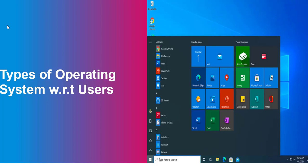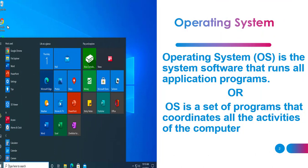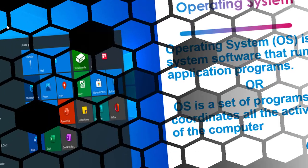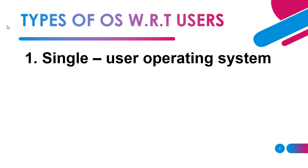Welcome to my YouTube channel. Today I'm going to discuss a very important topic: types of operating system with respect to users. An operating system is a system software that runs application programs, or we can say it is a set of programs that coordinates all the activities of the computer. Examples include Windows 8, Windows 10, Windows 7, and Linux — these are all types of system software.